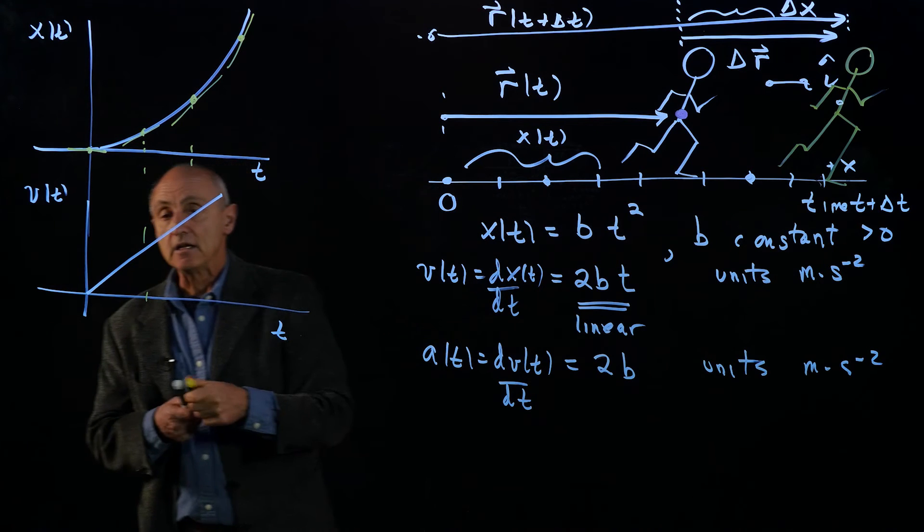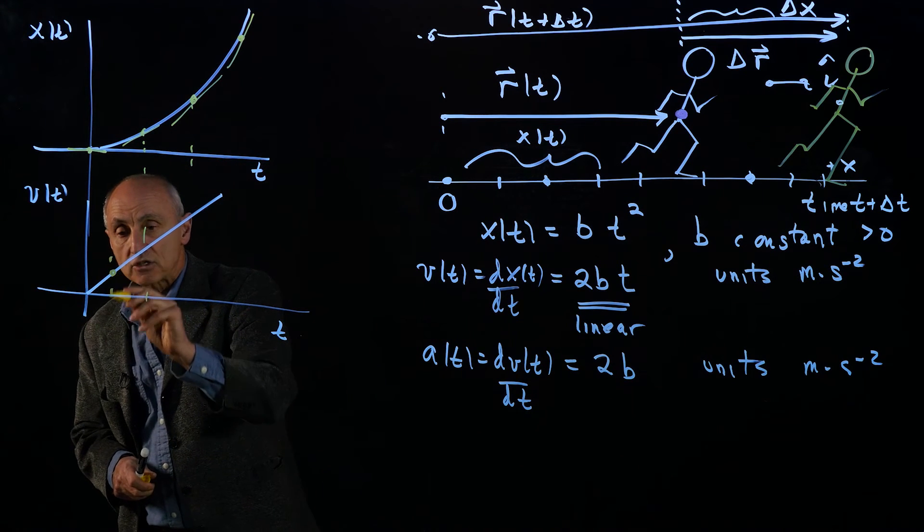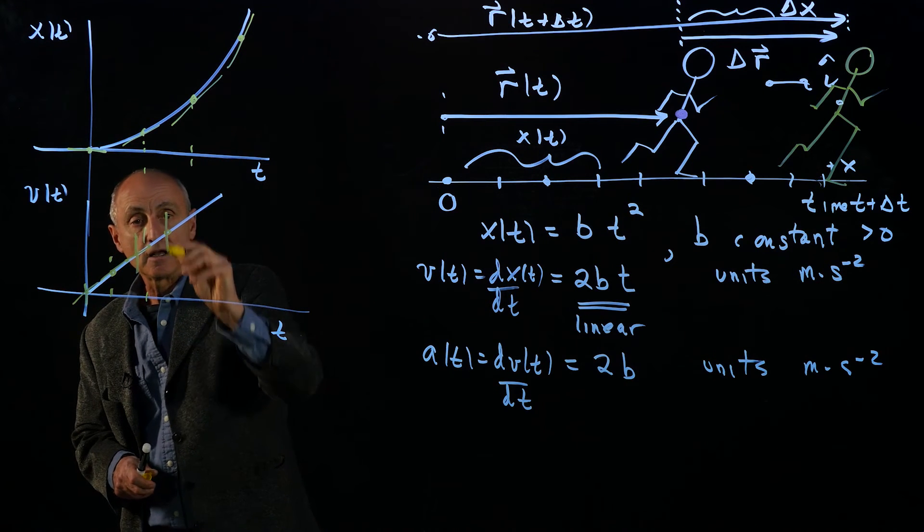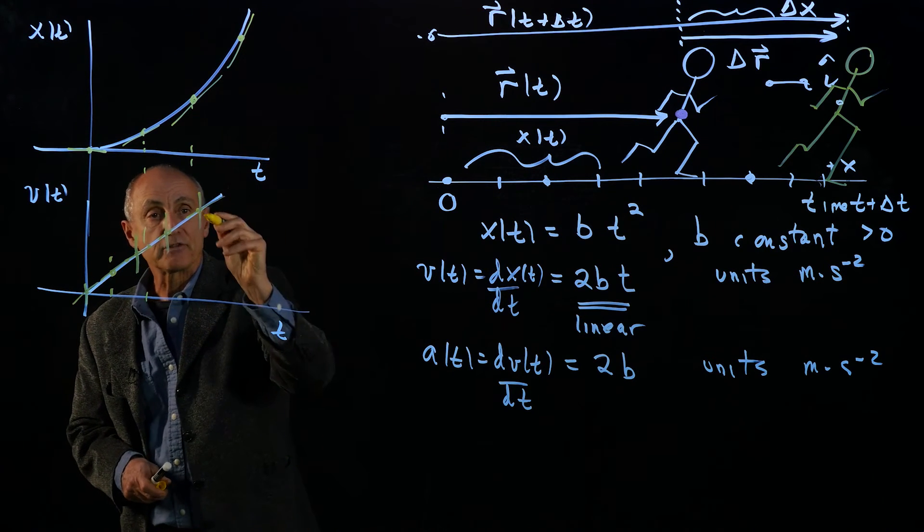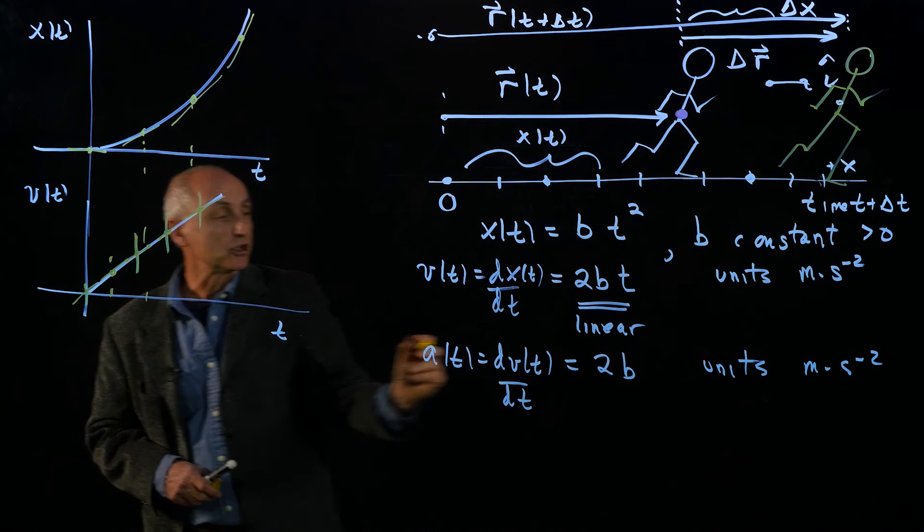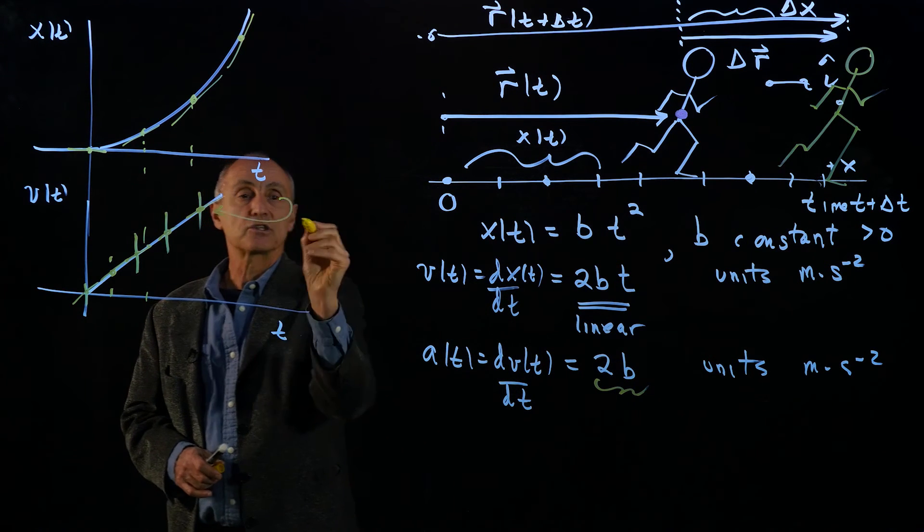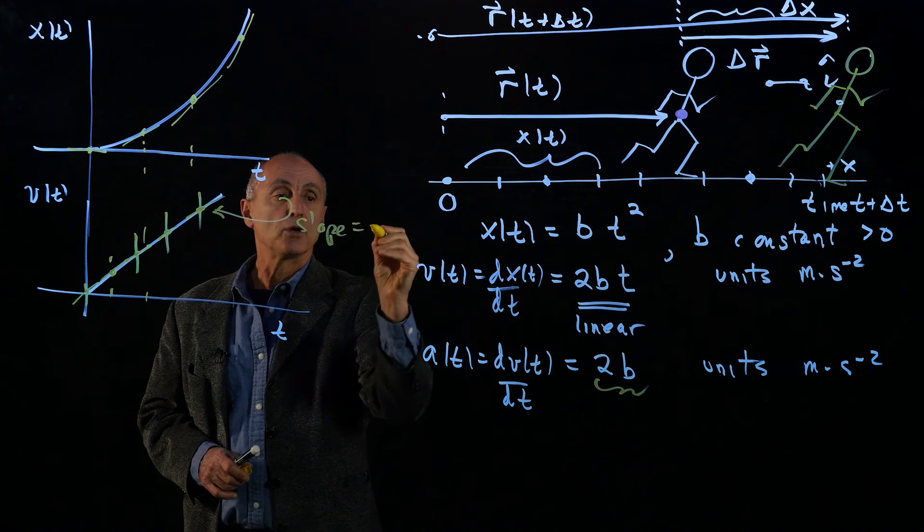When we again look at the slope, notice that at every single point, the slope of the velocity as a function of time is a constant. The slope here is just equal to 2b.